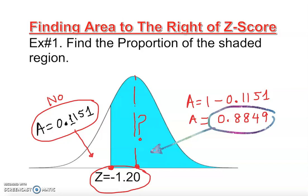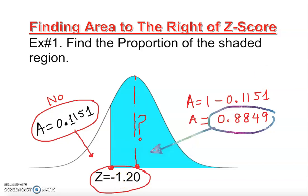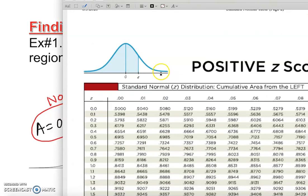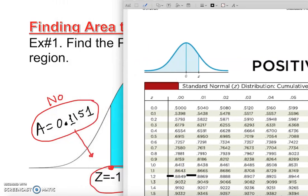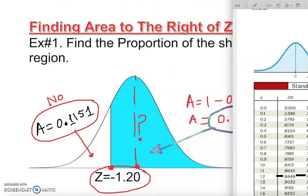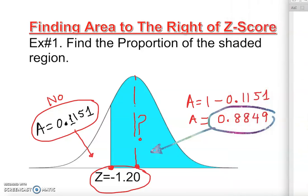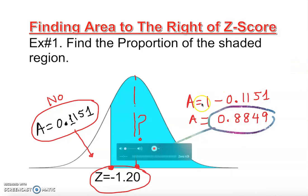There is another technique: if you're finding area to the right, whatever sign is given you just look at the opposite sign in the z-table. Here it was given as negative, so you look at the positive side. For positive 1.20 in the z-table, you get 0.8849 — exactly the same answer. It's your choice: subtract from 1, or go to the opposite z-table.